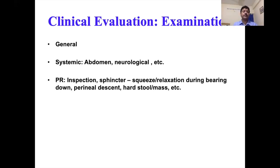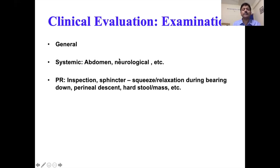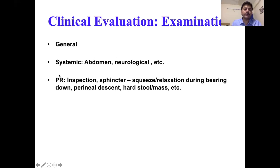Clinical examination is a very important part of assessment, including general examination, systemic examination, and per rectal examination. General and systemic examination are normal in functional constipation but are important to look for secondary causes. Per rectal examination is one of the most important aspects: inspect the perineal area, assess squeeze pressure when the patient contracts the sphincter, and observe whether the sphincter relaxes when the patient bears down and simulates defecation.